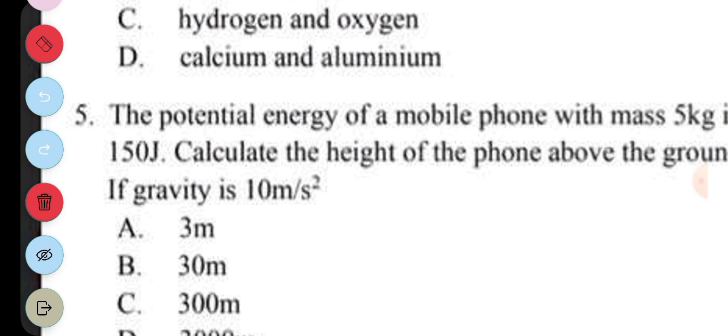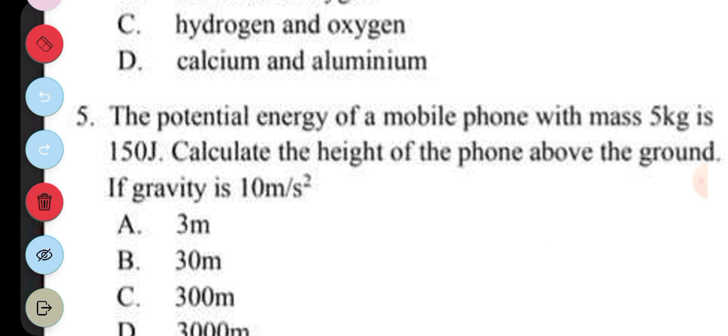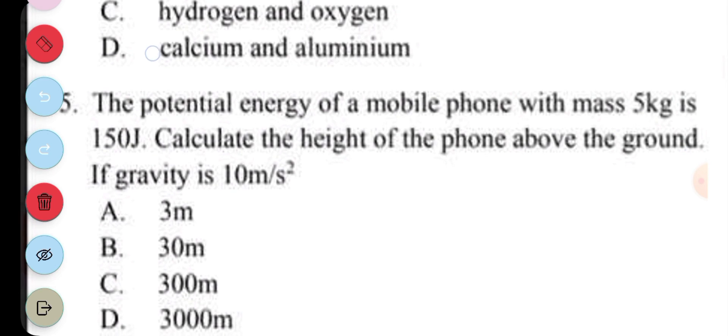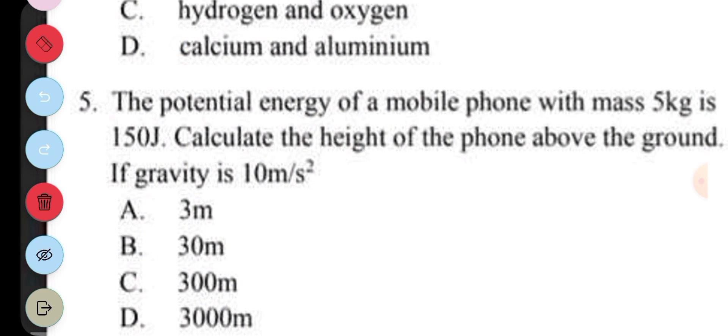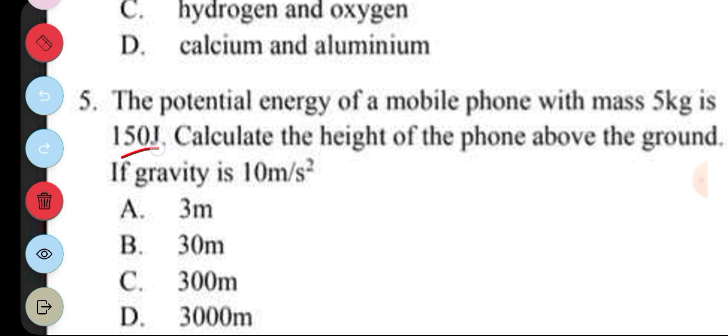Question 5. The potential energy of a mobile phone with mass 5kg is 150 joules. Calculate the height of the phone above the ground if gravity is 10 meters per second squared. So with this question we have our potential energy. Let's write the formula. Potential energy equals mass times gravity times height. The potential energy in this question is 150.